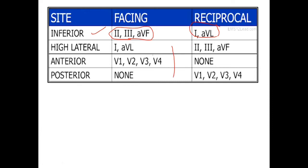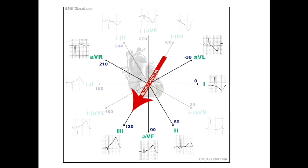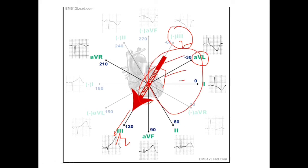There is maximum ST elevation in lead 3. That means the ST elevation vector — or injury current vector — is predominantly directed towards lead 3. The lead that is exactly opposite will show ST depression. The nearest opposite to lead 3 is lead AVL. Since it is a vector directed towards lead 3, this region will be exactly opposite in polarity, so there will be ST depression in lead AVL and lead 1. This is important to localize the culprit artery.